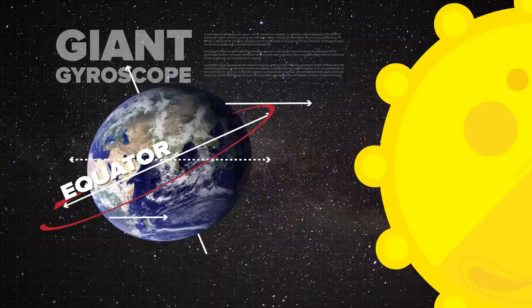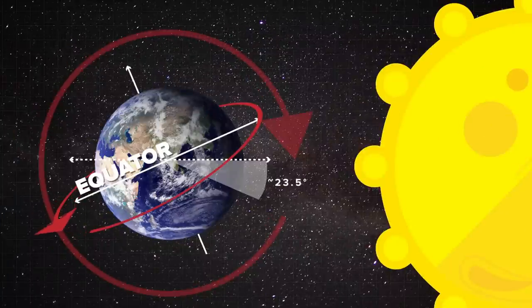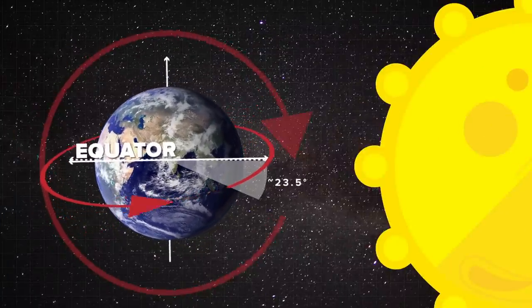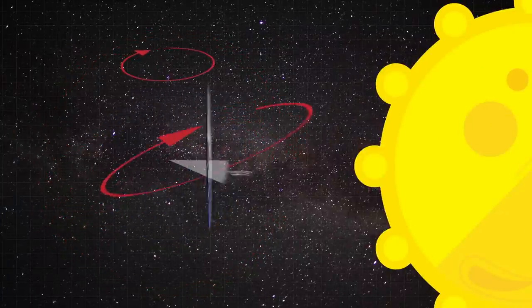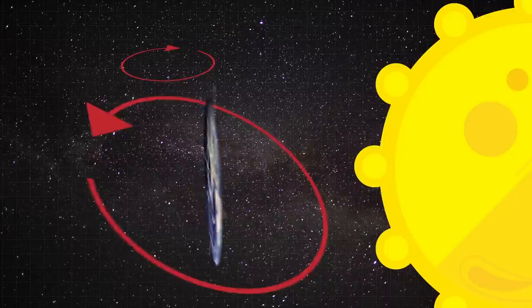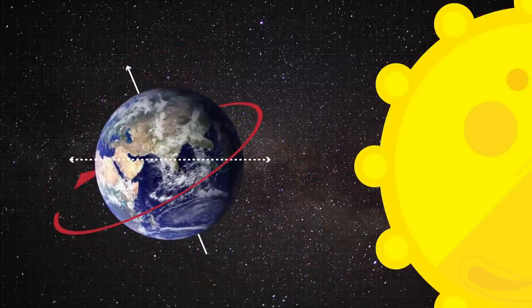So the gravitational pull of the sun is slightly stronger on the slightly closer half, causing a net torque on the Earth like this. You might expect that torque to tilt the axis back to zero degrees, but instead it causes the spin axis to precess, like a top. Why? Because that's just how gyroscopes work.